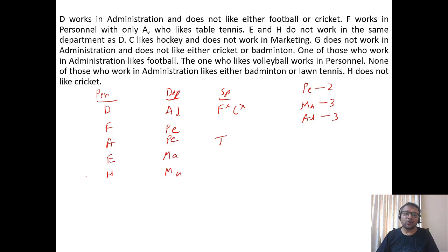C likes hockey and does not work in Marketing, so C works in Administration. G does not work in Administration, so G works in Marketing and does not like cricket or badminton. One of those who work in Administration